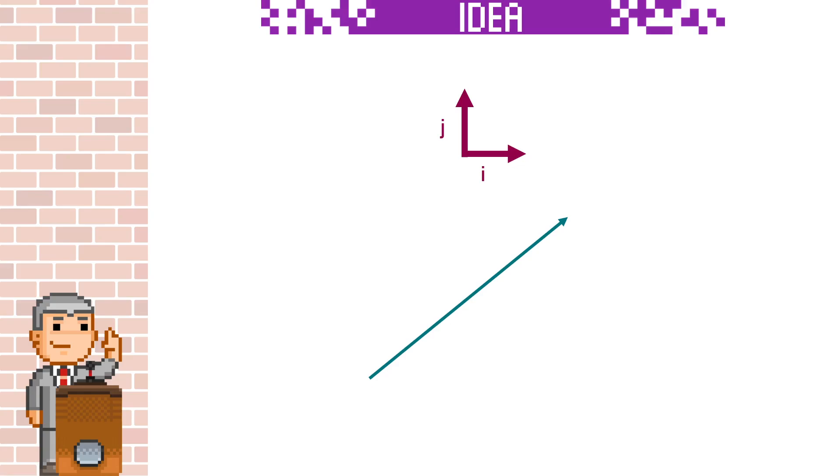You may be wondering what happens when a force isn't perfectly horizontal or vertical. Every diagonal line has a horizontal and a vertical component, so we can describe it in relation to these.